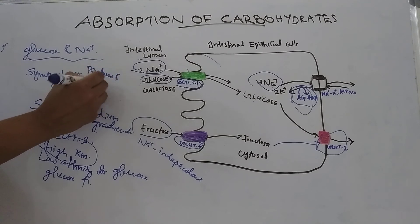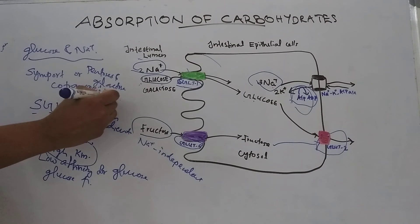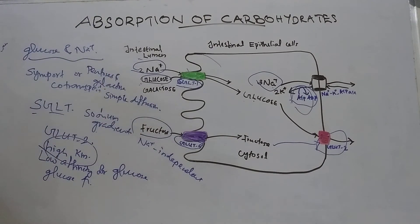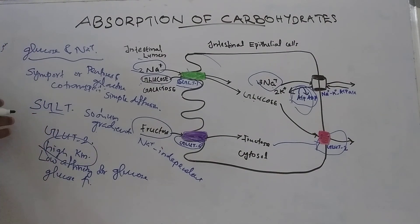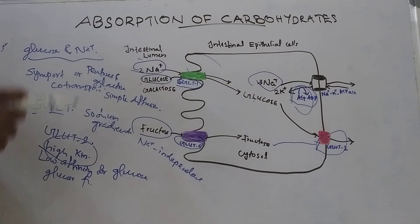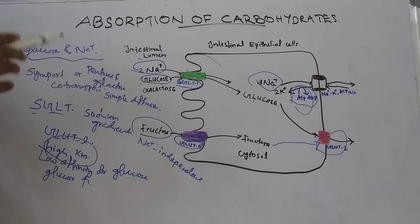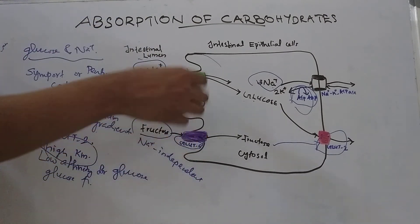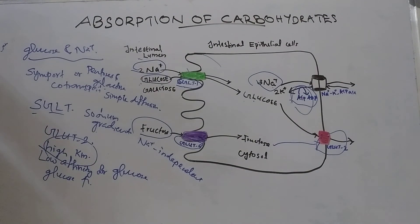Pentoses and galactose are absorbed passively by simple diffusion. Glucose, galactose, and fructose are transported out of the enterocyte through GLUT2, which is present on the basolateral surface. These monosaccharides then diffuse down the concentration gradient into the capillary blood. That concludes today's topic on the absorption of carbohydrates. Thank you for watching.